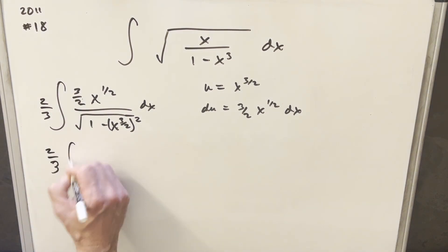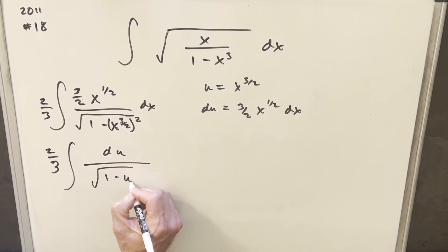So I have my two-thirds out front. We're going to have this thing's just du in the numerator. And then here we're going to have the square root of one minus u squared.